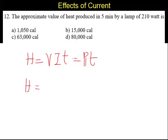So heat produced equals, power is 210, time is 5 minutes. 5 minutes is 5 into 60 seconds.